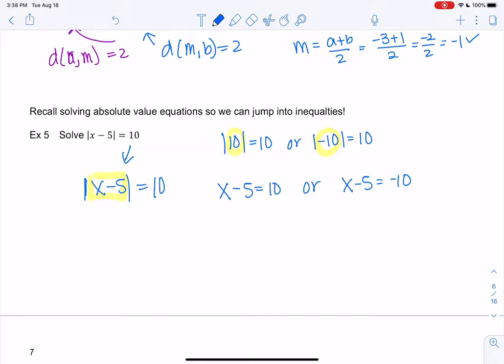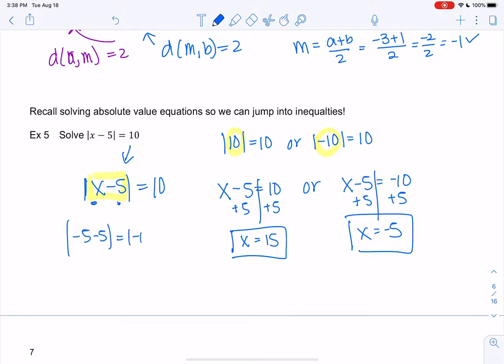Because either one of those would make the statement true. If I plugged in 10 or negative 10 inside of an absolute value, we would get 10 as the output. So let's solve. Add 5, right? Linear I will solve quickly because that is an algebra topic. If you need more linear, I can always send you videos. So I get x is 15. And that makes sense. 15 minus 5 is 10. And then for the other side, I get negative 5. So negative 5 plus negative 5 is negative 10. But since I'm taking an absolute value, it becomes 10. So that also works. So two solutions.